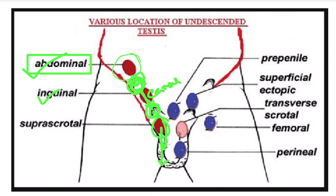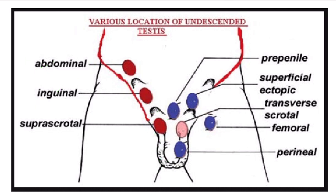Any testis that is arrested along this normal pathway is known as the undescended testis. This term is very important: if the testis going to the scrotum becomes arrested at any part of its pathway, it is known as the undescended testis.